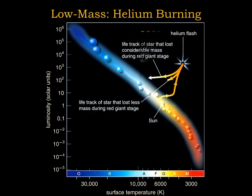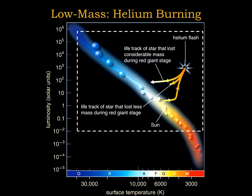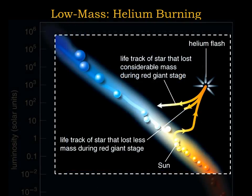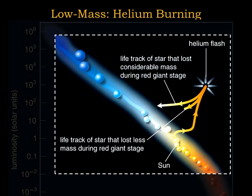We can again follow the life track of the star on the HR diagram. Because the helium core fusion star is now smaller and hotter than it was as a red giant, its life track drops downward and to the left on the HR diagram. The helium cores of all low mass stars fuse helium into carbon at about the same rate, so these stars all have about the same luminosity. Stars that expelled more mass through their stellar winds end up with smaller radii and higher surface temperatures, placing them farther to the left, while stars that lost less mass are cooler and to the right.